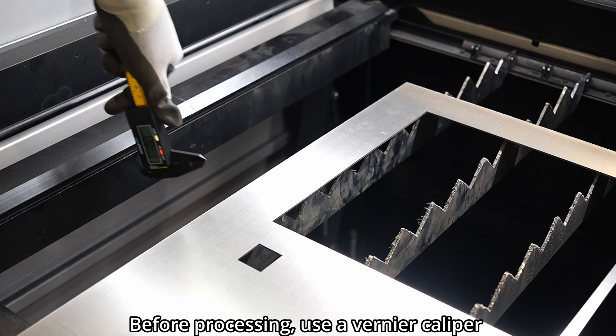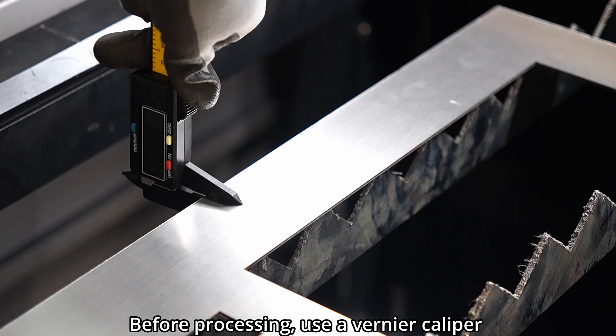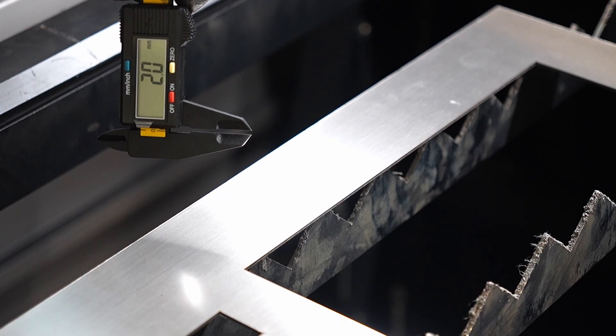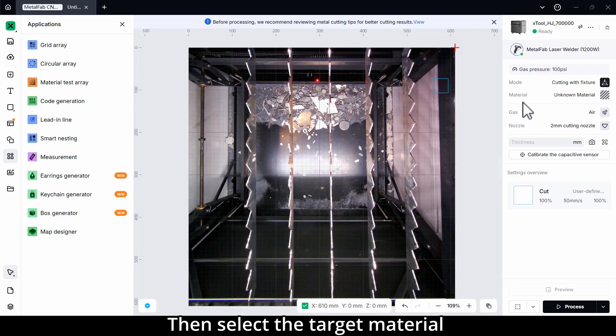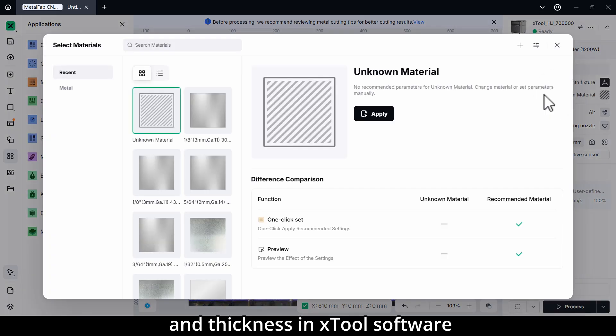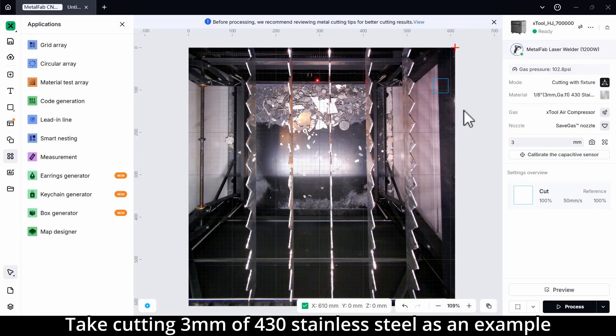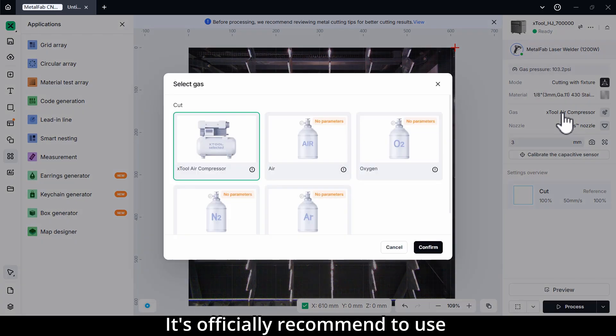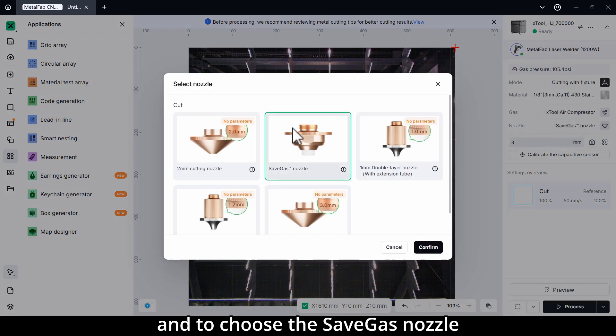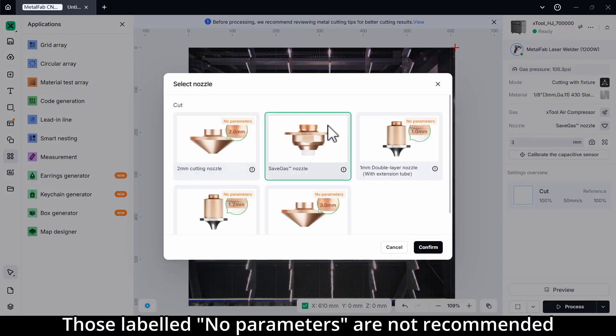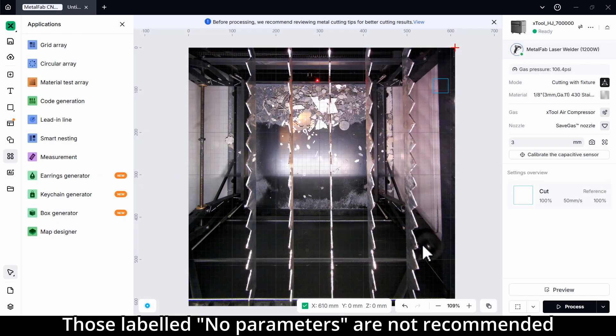Before processing, use a vernier caliper to measure the material thickness. Then, select the target material and thickness in Xtool software. Take cutting 3 mm stainless steel as an example. It is officially recommended to use a compressor for air supply and to choose the save gas nozzle. Those labeled no parameters are not recommended.